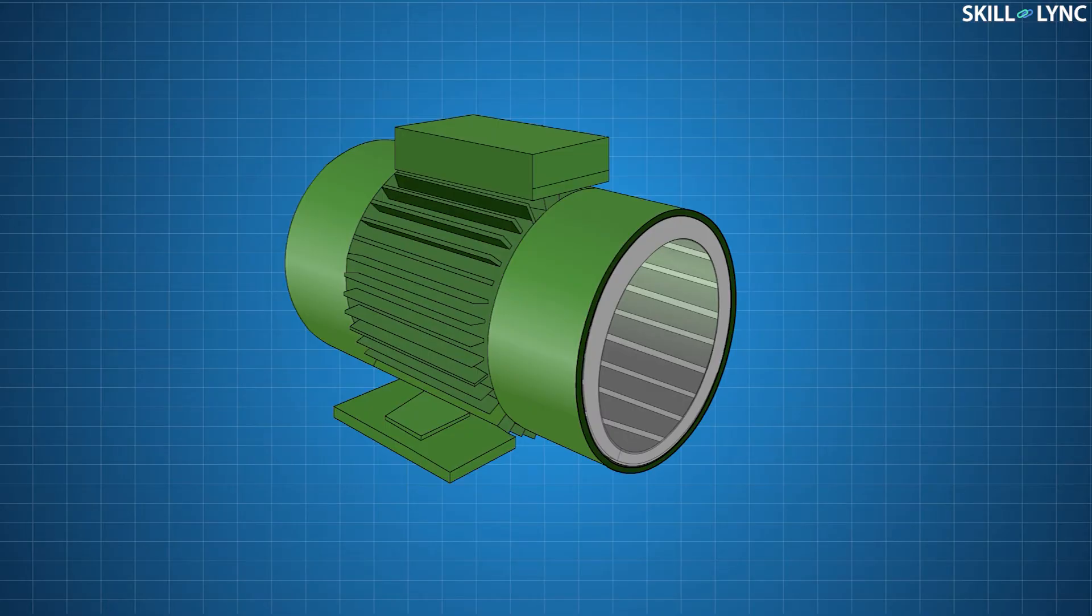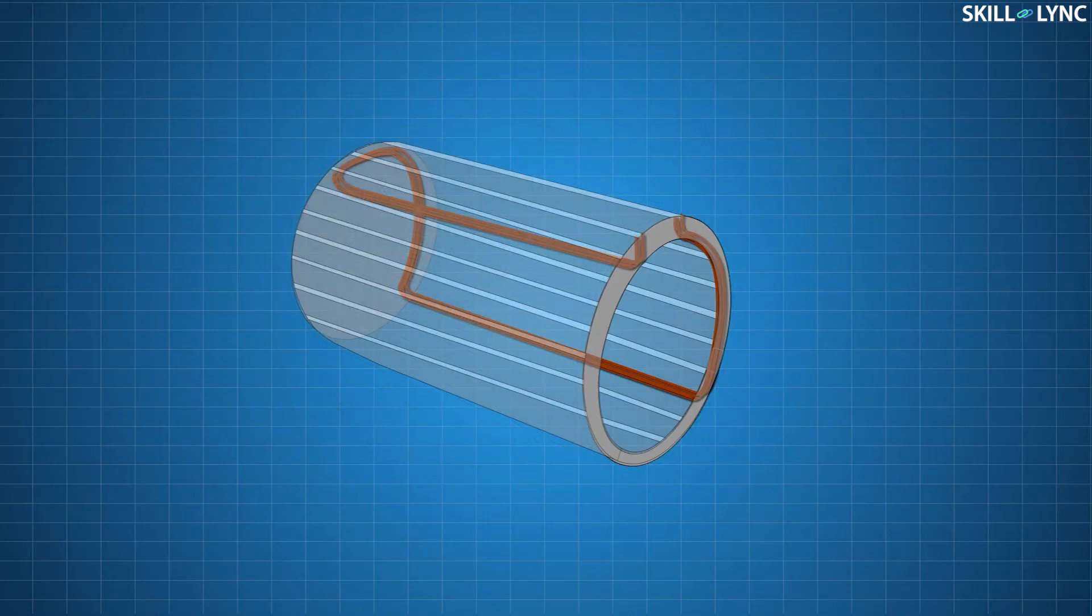These holes are arranged in a way to hold the windings. The laminated sheets are used to reduce eddy current losses. The stator consists of the main winding via which a single phase AC supply is given to it.